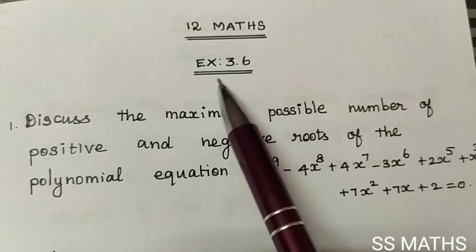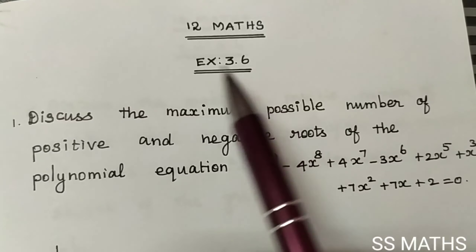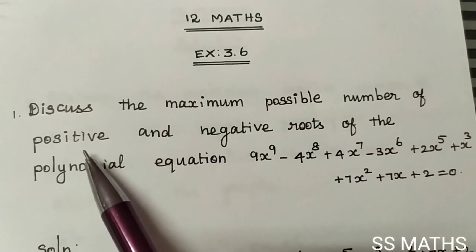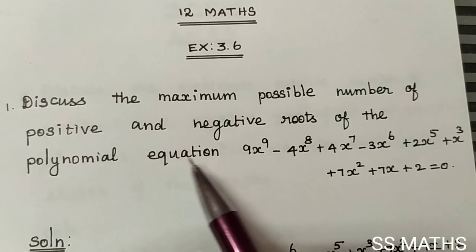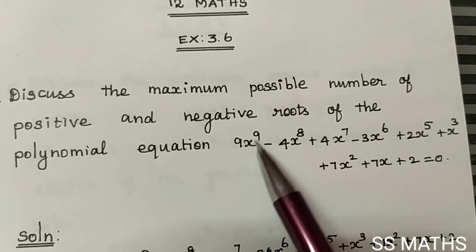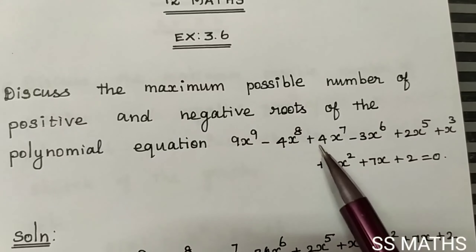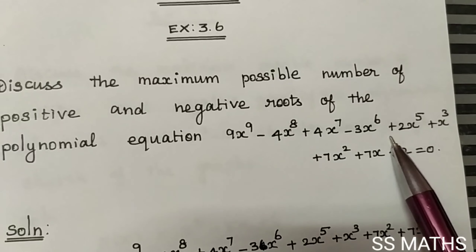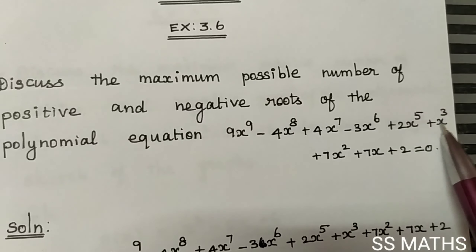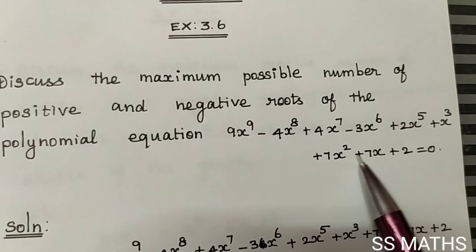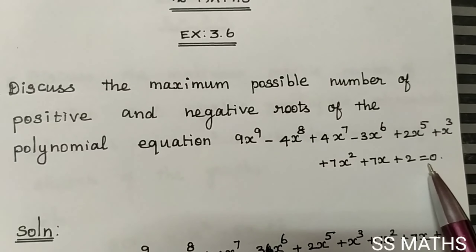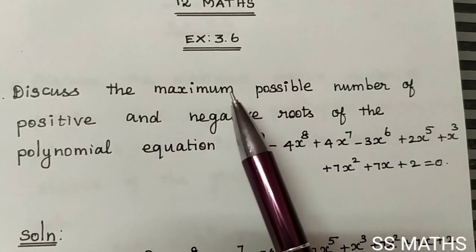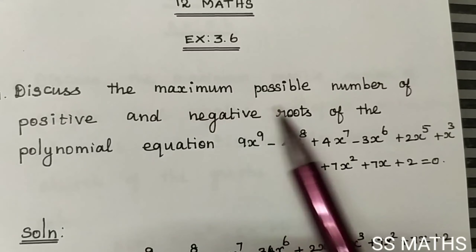Hi students. Plus 2 maths, exercise 3.6, question number 1: discuss the maximum possible number of positive and negative roots of the polynomial equation 9x⁹ − 4x⁸ + 4x⁷ − 3x⁶ + 2x⁵ + x³ + 7x² + 7x + 2 = 0. We need to find the maximum positive root and maximum negative root.